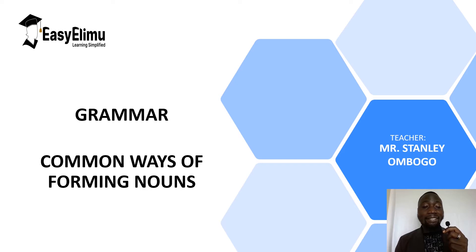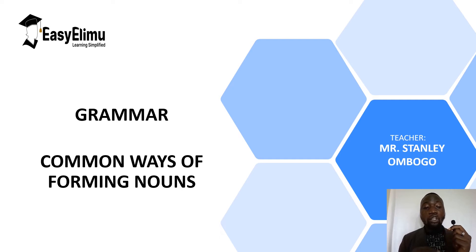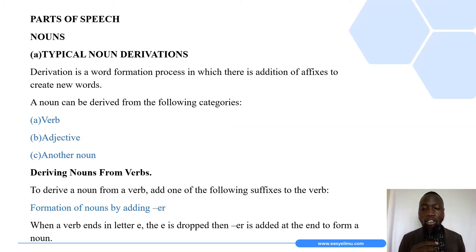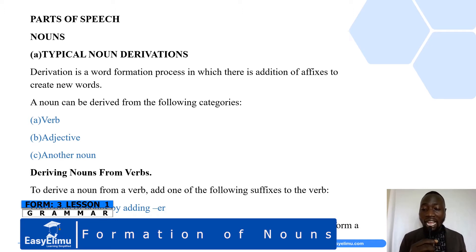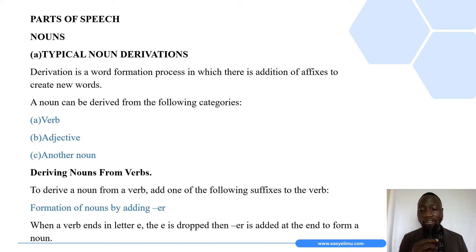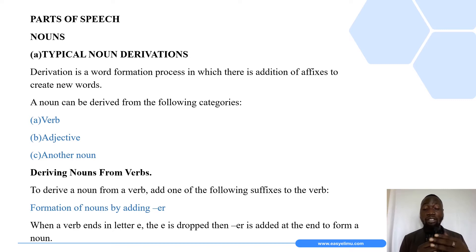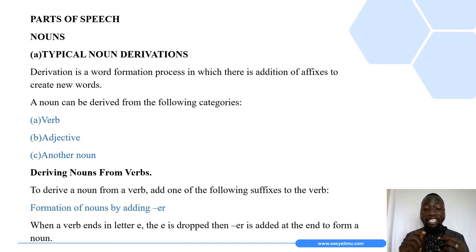In today's grammar lesson, I want us to look at typical noun derivations — or what we call in common terms, the common ways of forming nouns. We are simply going to look at how nouns are formed. Remember, nouns are naming words — words used to name animals, people, places, objects, things, and so on.